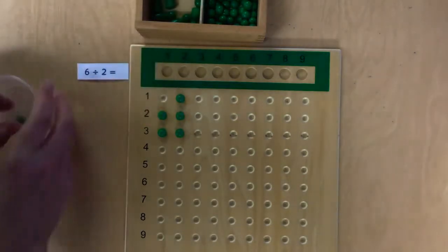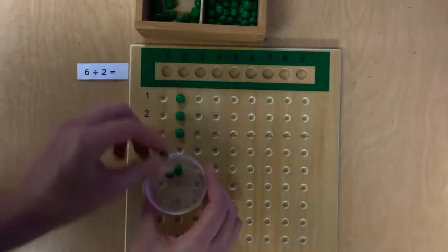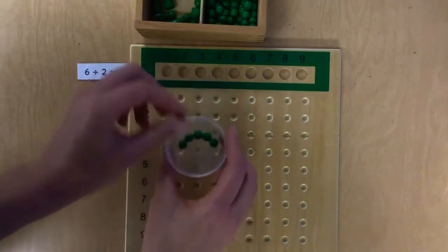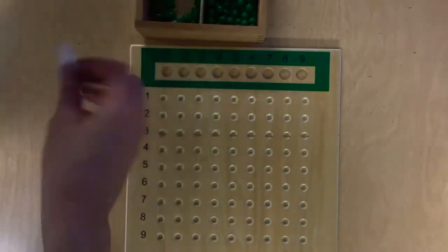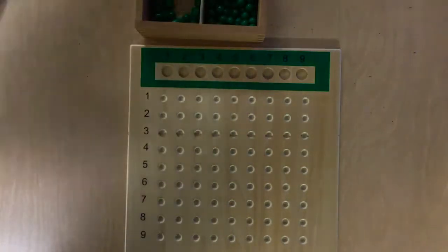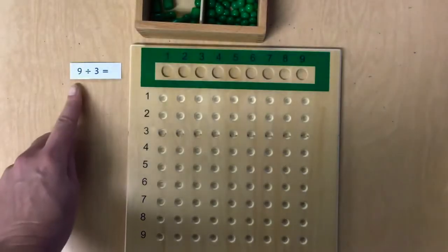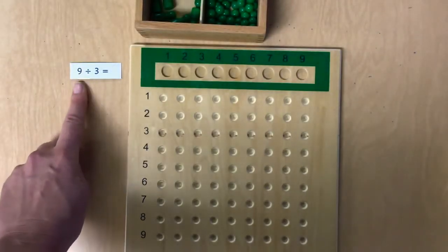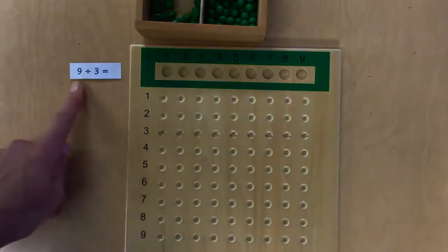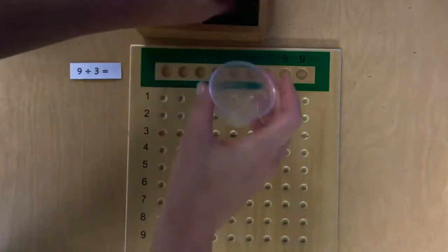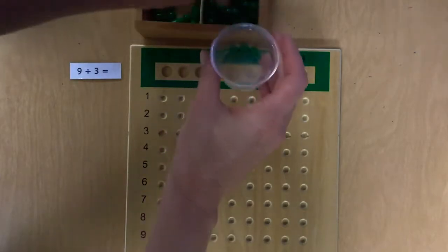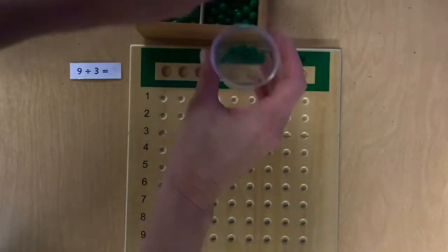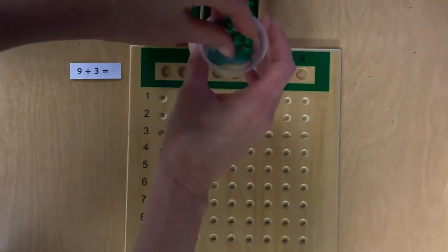Let's do another example. This time we have 9 divided by 3. So how many of the green beads are we going to take? Yeah, 9. 1, 2, 3, 4, 5, 6, 7, 8, 9.